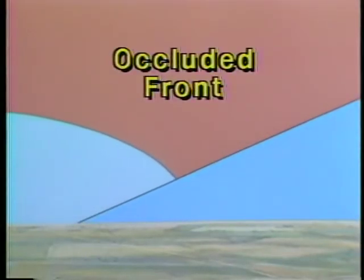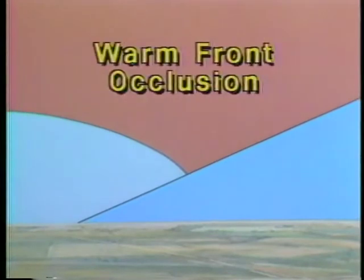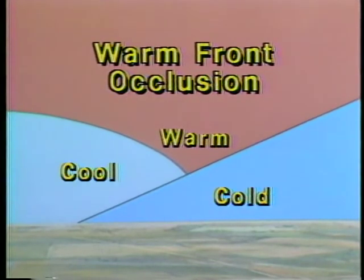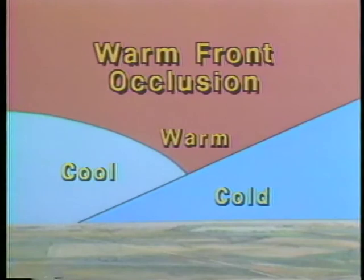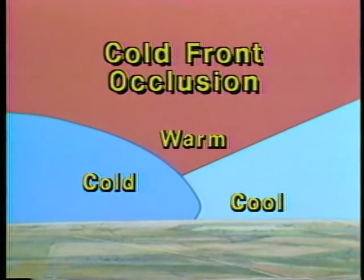One of the most complicated frontal systems is the occluded front. In this case, a fast-moving cold front is overtaking a slower-moving warm front. There are two types of occluded fronts. The one shown here is a warm front occlusion, because the air ahead of the warm front is colder than the overtaking cool air mass. Of the two types of occlusions, this one produces the more severe weather. The other type is a cold front occlusion, where the cold air is replacing cool air at the surface. This type of occlusion generally doesn't produce weather as poor as a warm front occlusion.